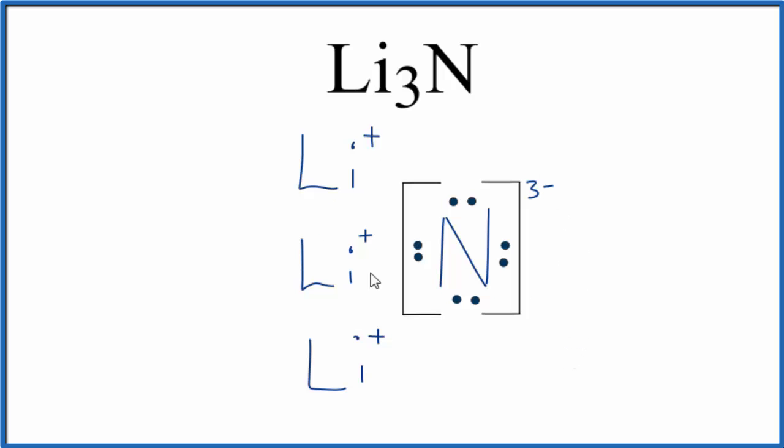This is still very useful to tell how the lithium, the one valence electron from each lithium, is transferred to the nitrogen to give us the Lewis structure for Li3N, lithium nitride.